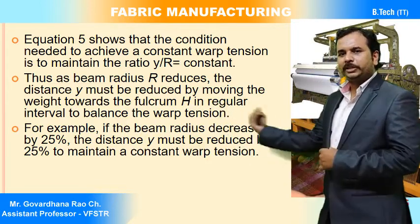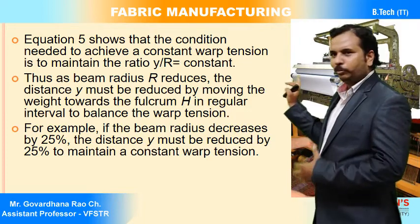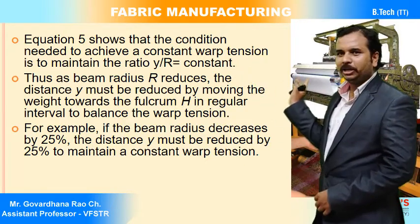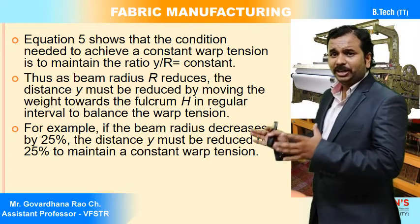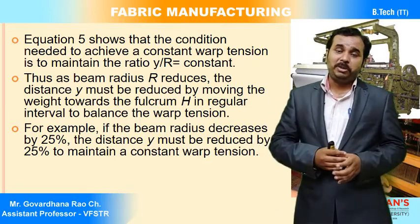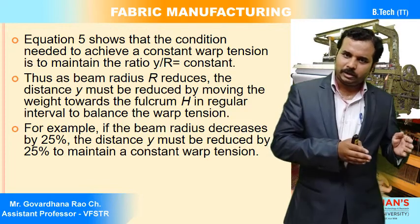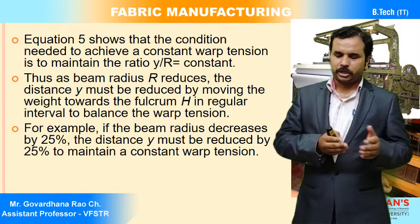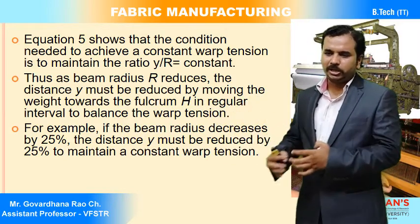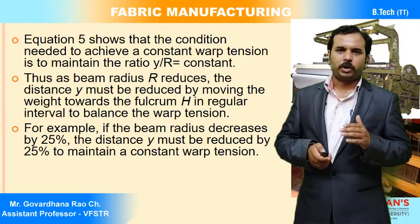At the start of the beam the radius is larger, so the dead weight is placed at the far end of the lever. As the beam exhausts, the weaver regularly shifts the dead weight toward the fulcrum to maintain constant warp tension. This is one of the weaver's key jobs — monitoring and adjusting dead weight position throughout the beam completion.